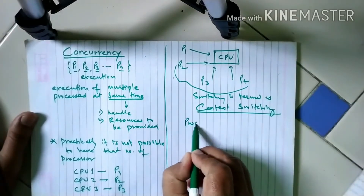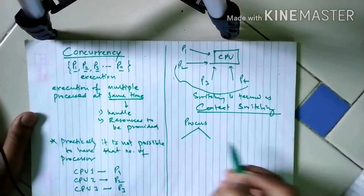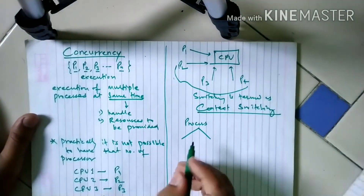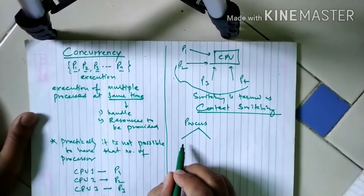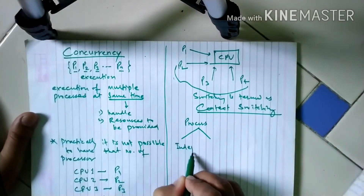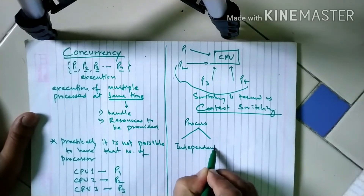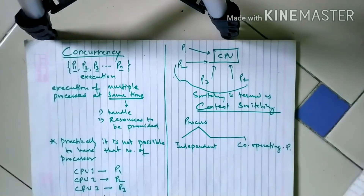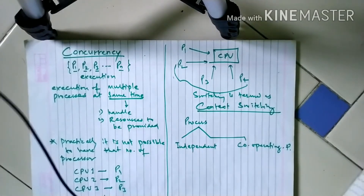We'll learn about context switching as well. The processes which are coming for execution in the environment of concurrency are divided into two types: the first is independent processes, and the second is cooperating processes.